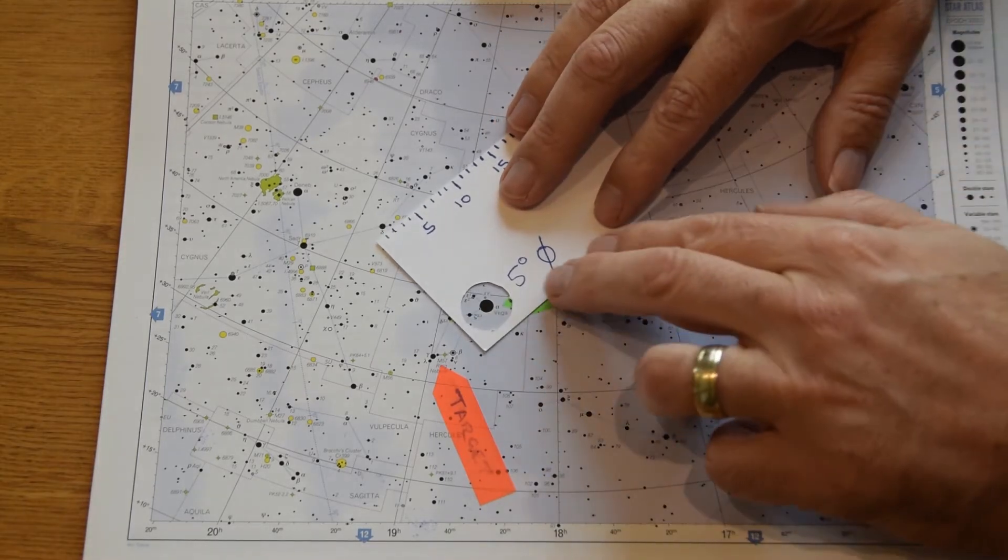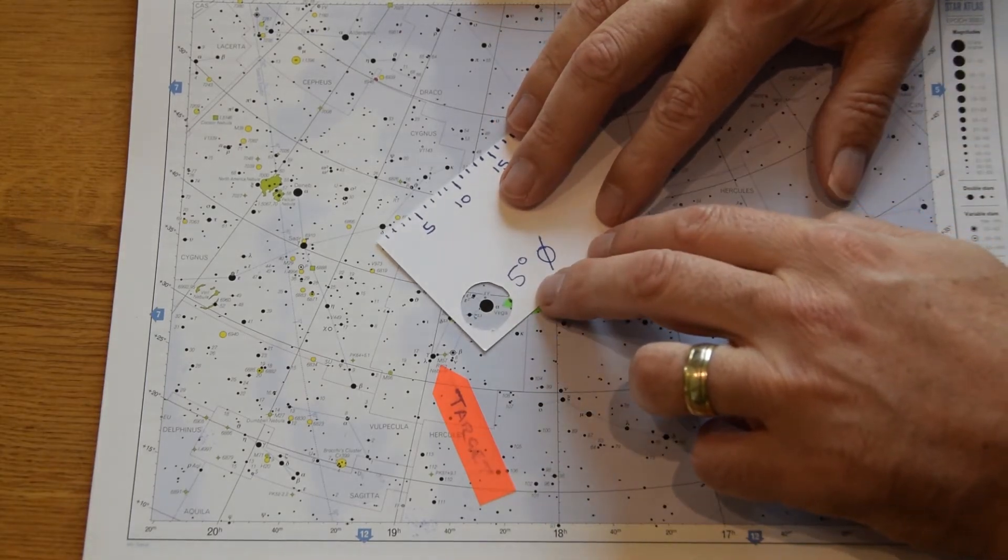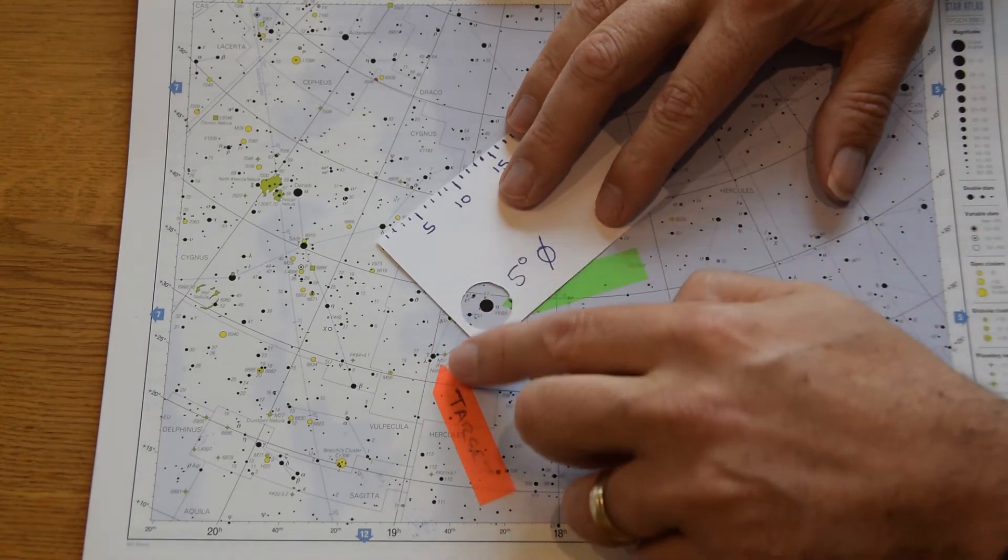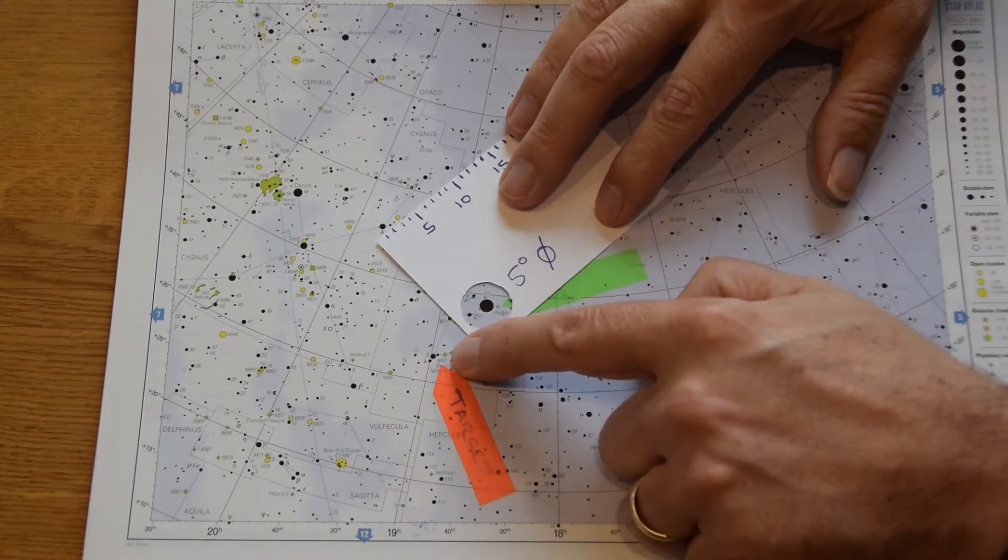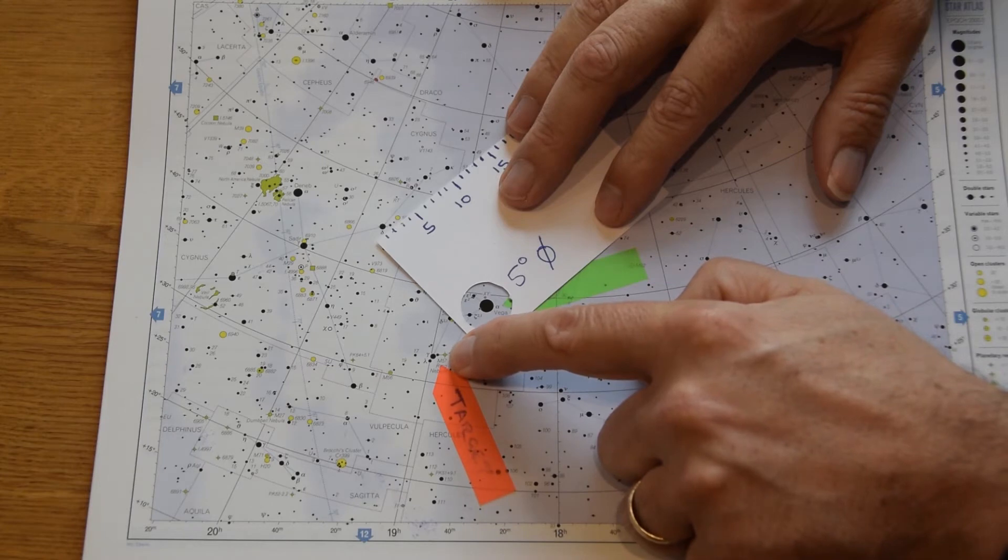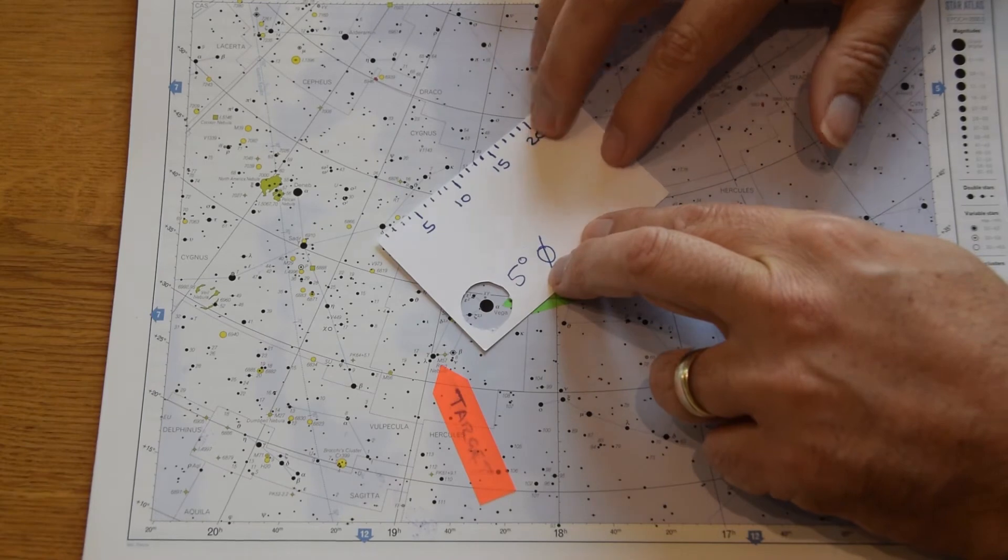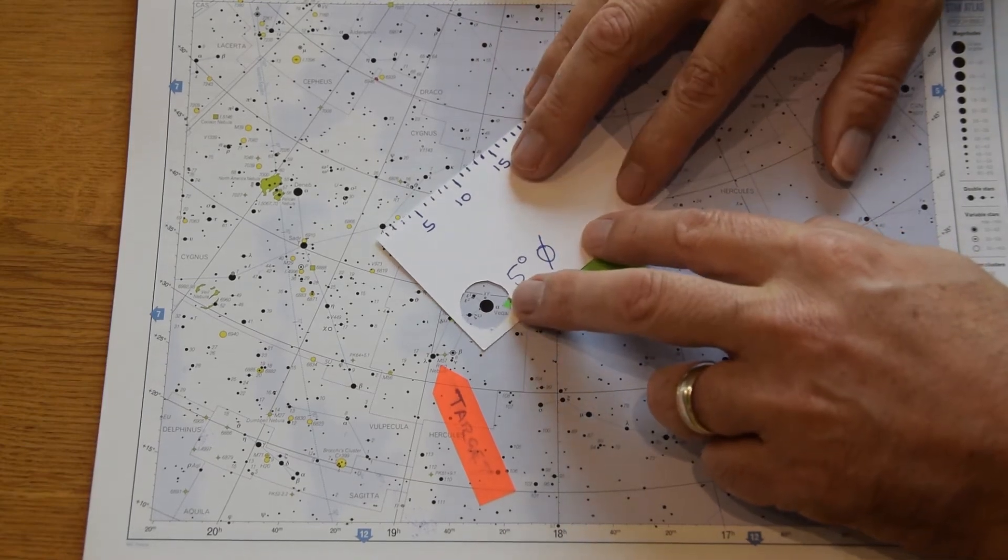Okay so coming back, center on Vega and you can see we need to move down through the parallelogram down to the bottom. M57, this little green circle with the cross in it, is the planetary nebula and we need to know which way to move. That's the thing.